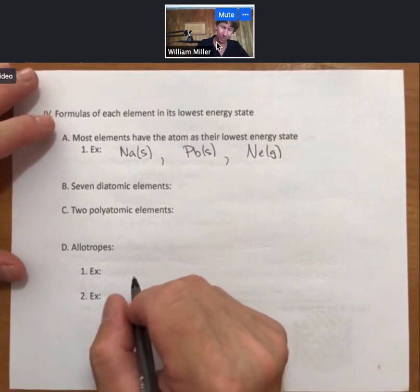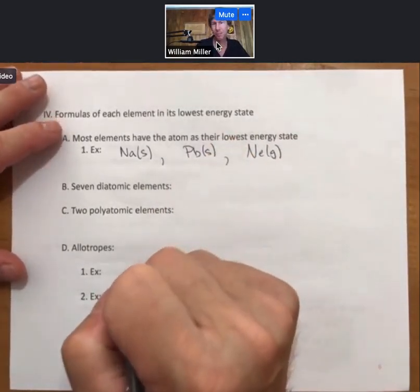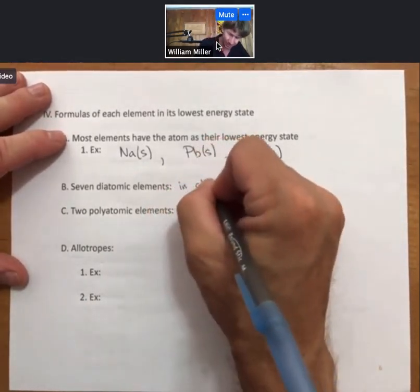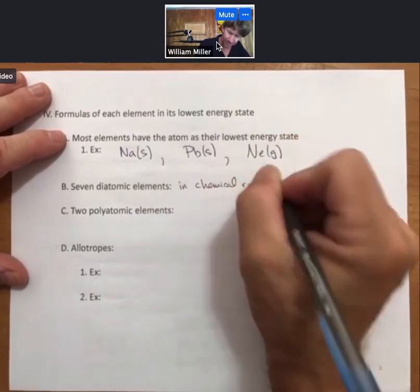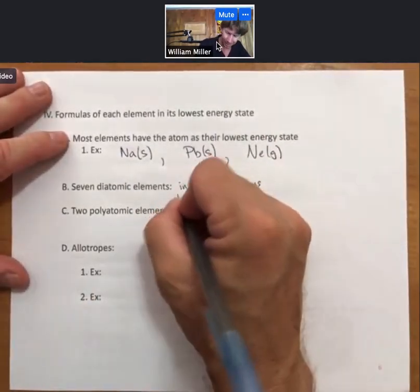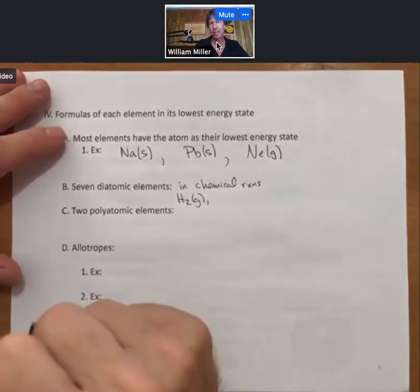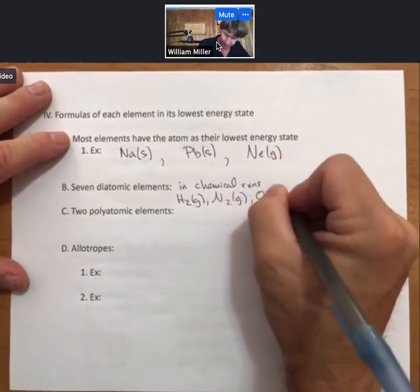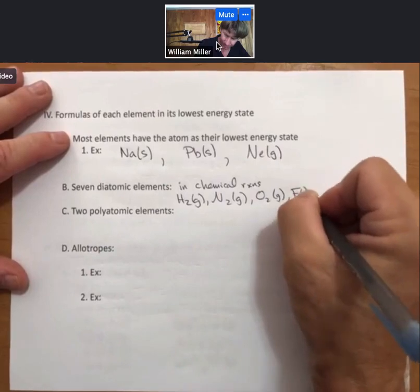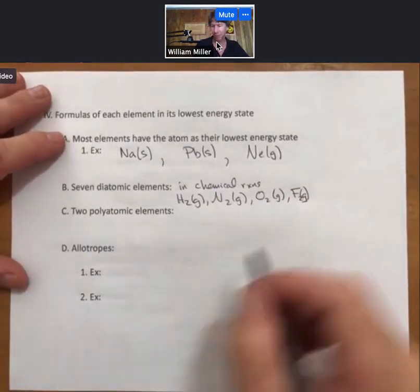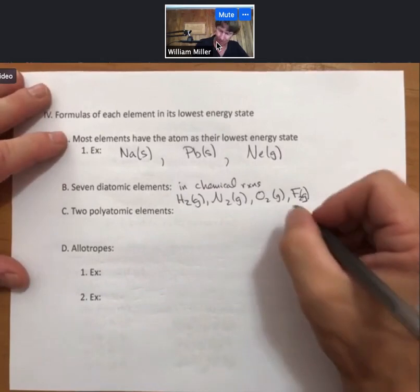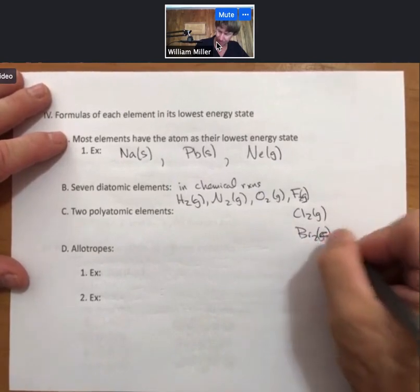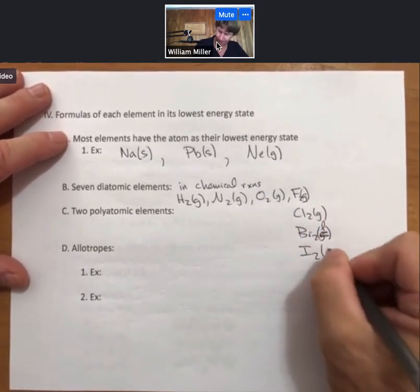And those are hydrogen, nitrogen, oxygen, and fluorine. Fluorine is our halogen. Go down the halogen row. Chlorine, bromine, bromine is a liquid. And iodine is a solid.